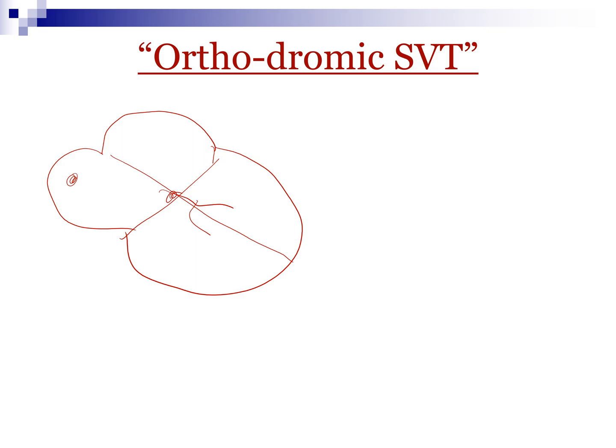When it comes to WPW, we know that there is an accessory pathway — an extra channel that links the atrium to the ventricle without going through the AV node. To create a complete circuit of re-entry, it can be done via one of two ways.